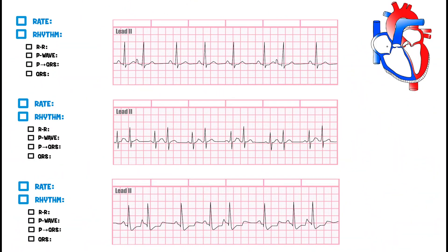In this video we're going to talk about how to determine the rate and rhythm for the following rhythm strips. These are going to be premature atrial contractions, which we also call PACs.